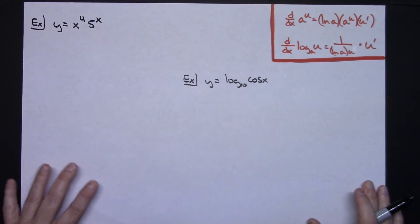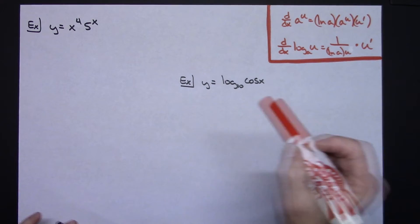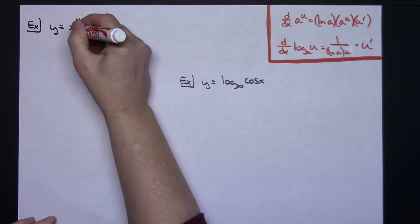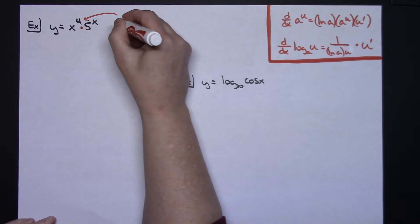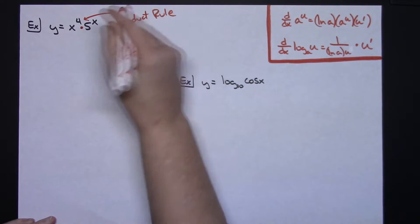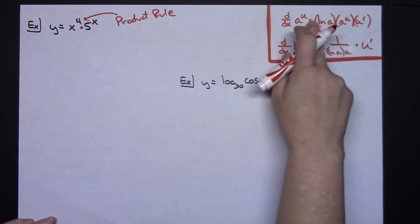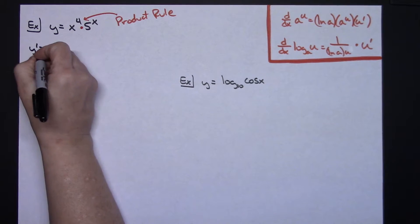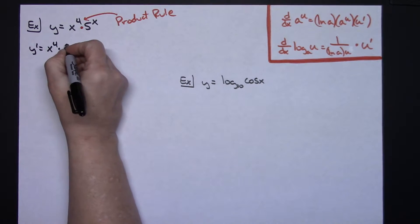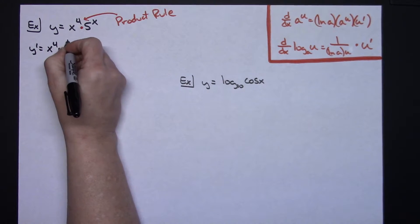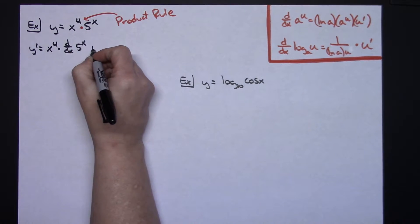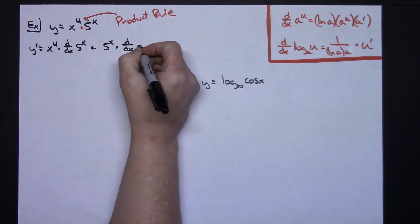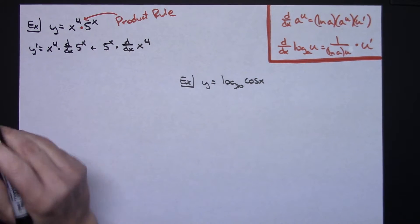I've rewritten those formulas in the top right-hand corner so we've got them to look at. On this example we've got y equals x to the 4th times 5 raised to the x, so there's a product rule going on. We'll have to implement the product rule, and because my base 5 is a constant it fits that first formula. Implementing product rule: y prime equals x to the 4th times d/dx of 5 to the x, plus 5 to the x times d/dx of x to the 4th.